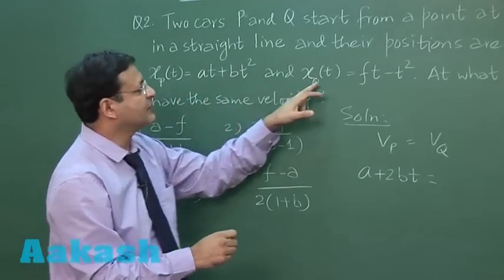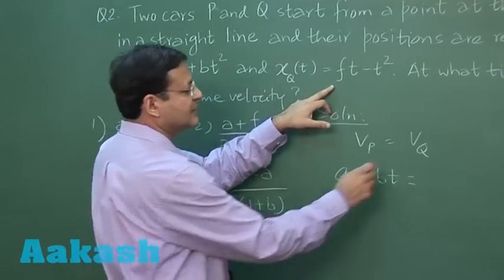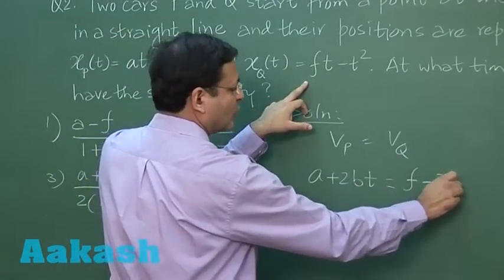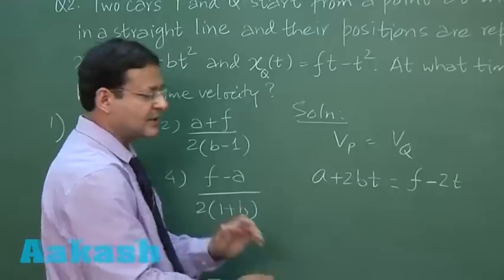And if you differentiate this expression, you will be getting the velocity of Q, that is equal to f minus 2t. So all you have to do is just calculate the value of time.